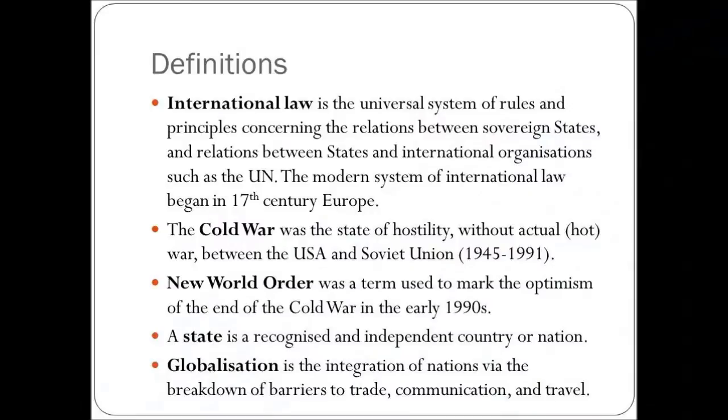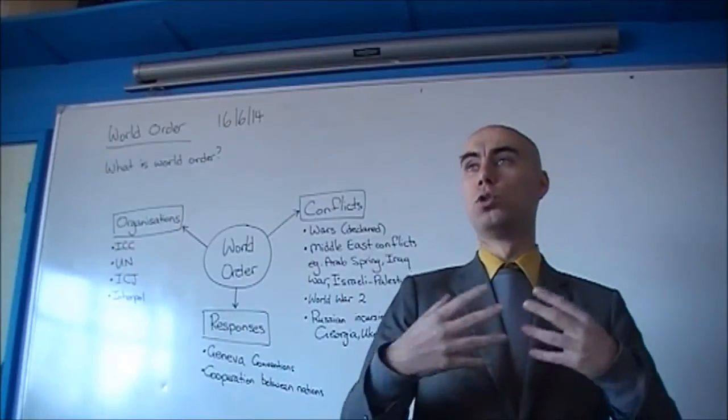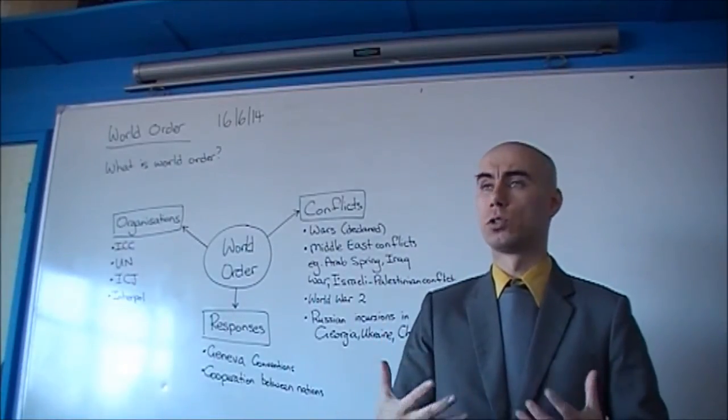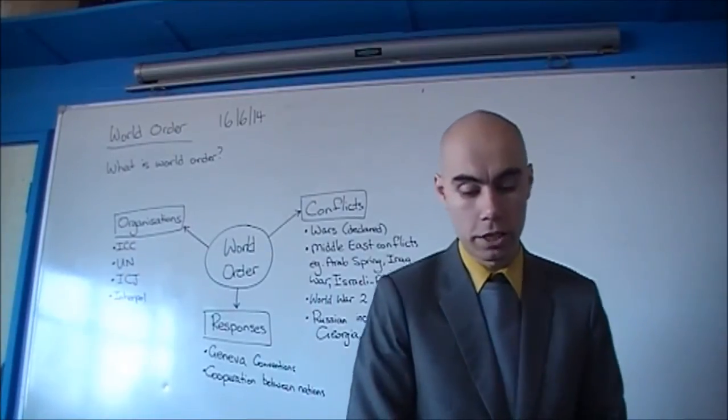Then you had something known as the New World Order. We don't use this term very much anymore. It was used mainly in the 90s to mark the optimism of the end of the Cold War. So the idea that you no longer had these two superpowers who were antagonistic towards each other. You had two countries or two superpowers who were more likely to work cooperatively with each other.